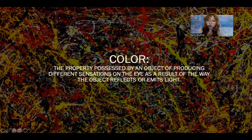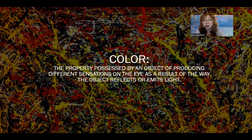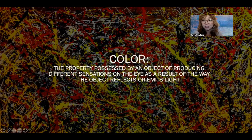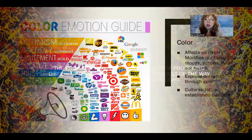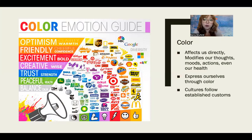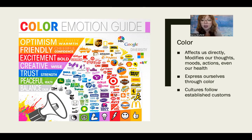Our next element is color. Color is the property possessed by an object of producing different sensations of the eye as a result of the way the object reflects or emits light. Color can affect our mood directly and modify our thoughts, actions, and even our health sometimes. We can express ourselves through the use of color based on how we're feeling or what kind of aesthetic we want, and certain cultures follow established customs of colors.